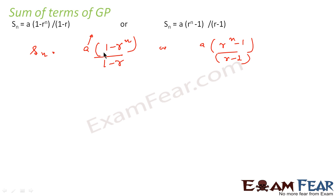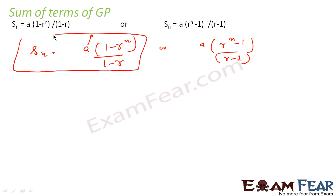Please note this formula: Sn equals a times (1 minus r to the power n) by (1 minus r). It is a very crucial formula. With this we'll solve a lot of problems. Now I'll try to prove this formula — we'll prove it by induction.